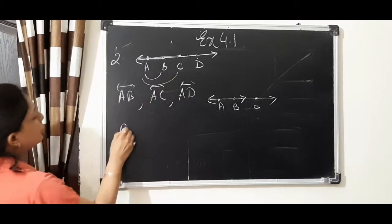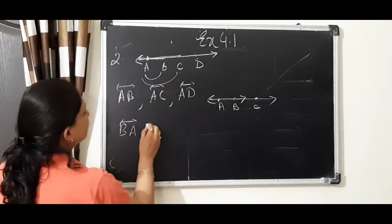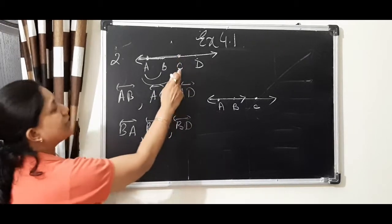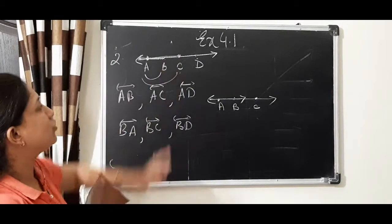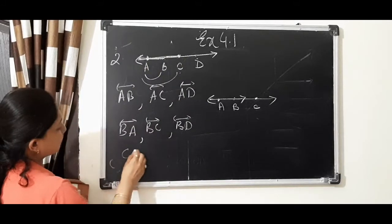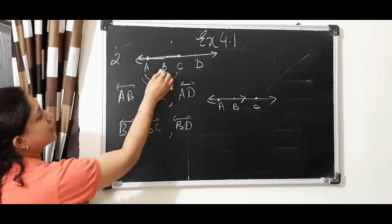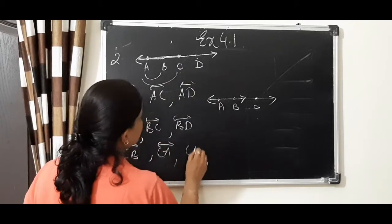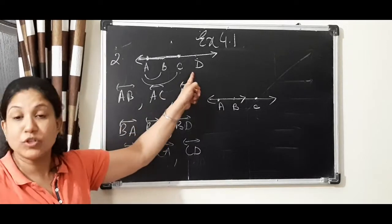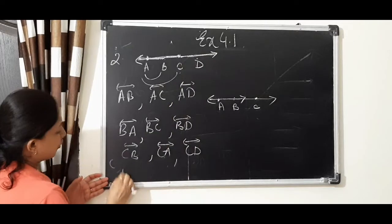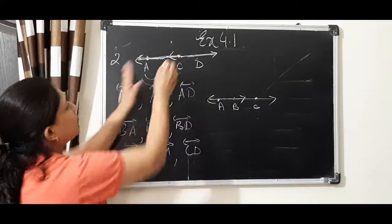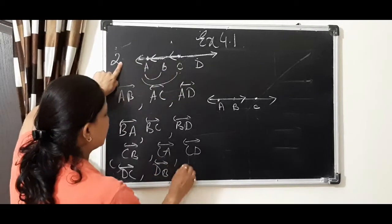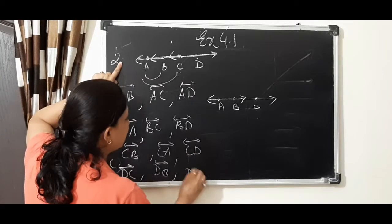Then if we take B as center: BA is one line, BC is also one line, BD is also one line. Now starting from C: CB can be one line, CA is another line, CD is also one line. Now talking about D: DC is one, DB is one, DA is one. So we have written it in 12 ways. This is question number 2.